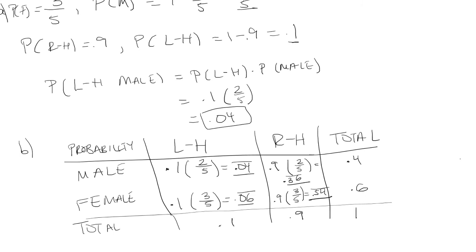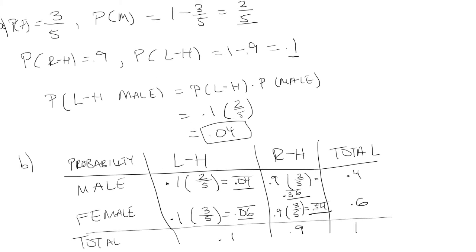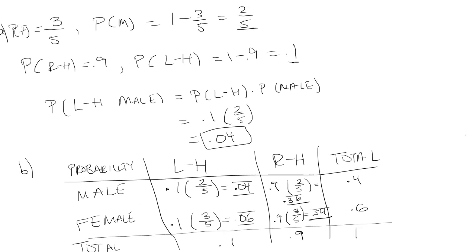So this looks good. And another check we can make is as follows. We know that the probability of a female is three-fifths, which is 0.6. And if you go in the female row, we end up having 0.6. So that's good. For the male row, it's two-fifths.